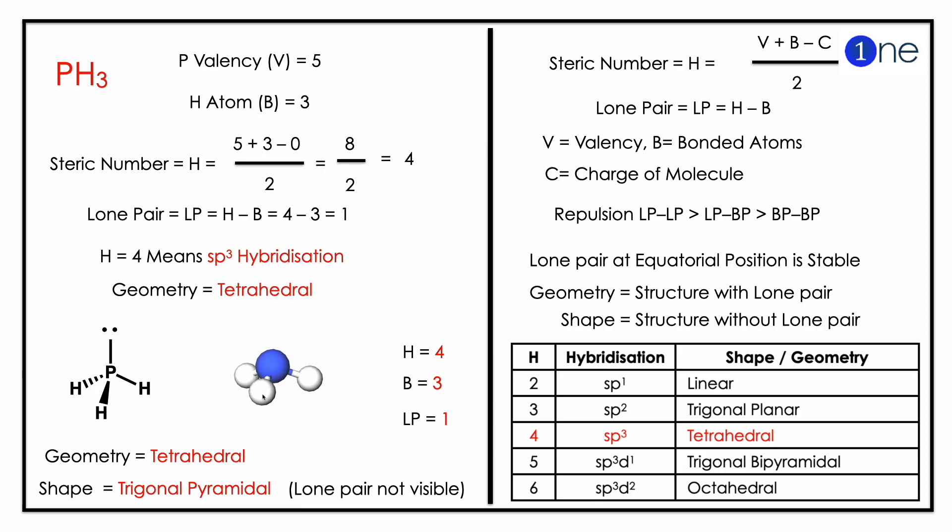So geometry is tetrahedral, shape is trigonal pyramidal because lone pair is not visible. So the shape of PH3 is trigonal pyramidal.